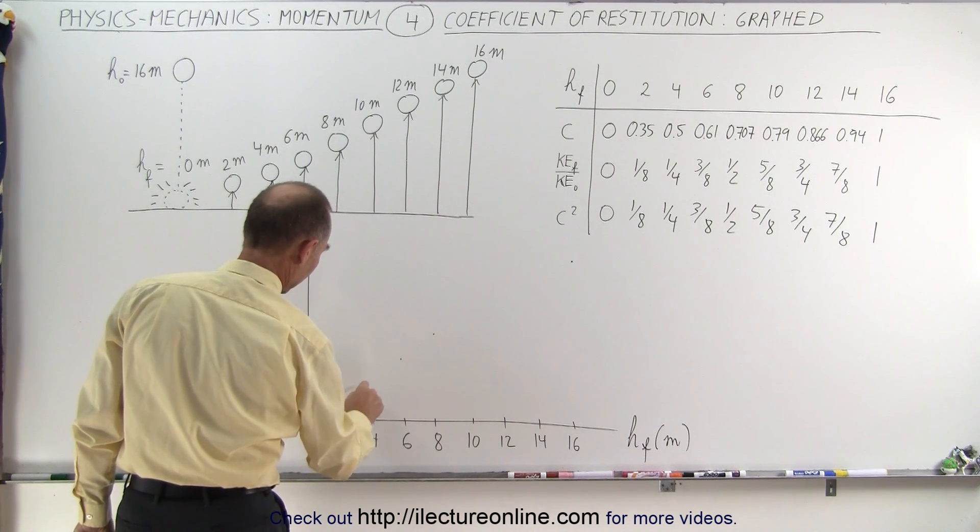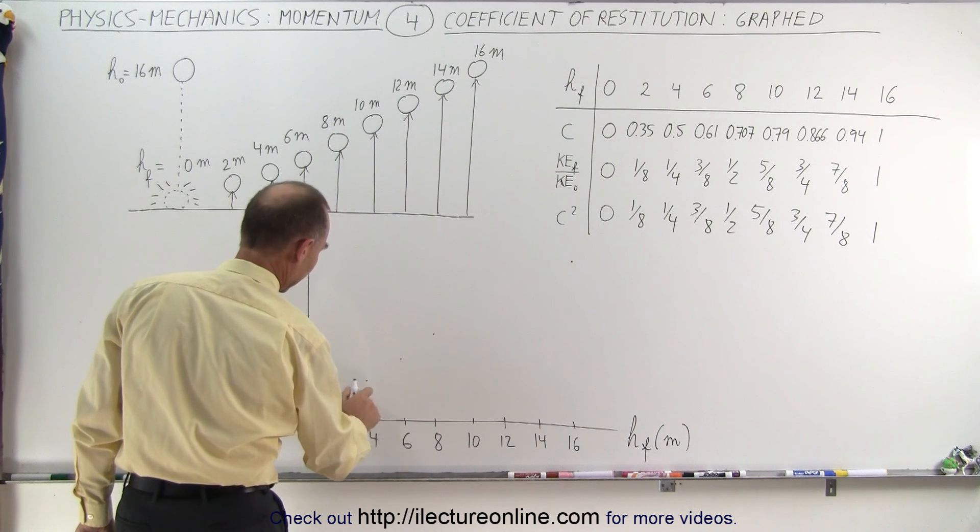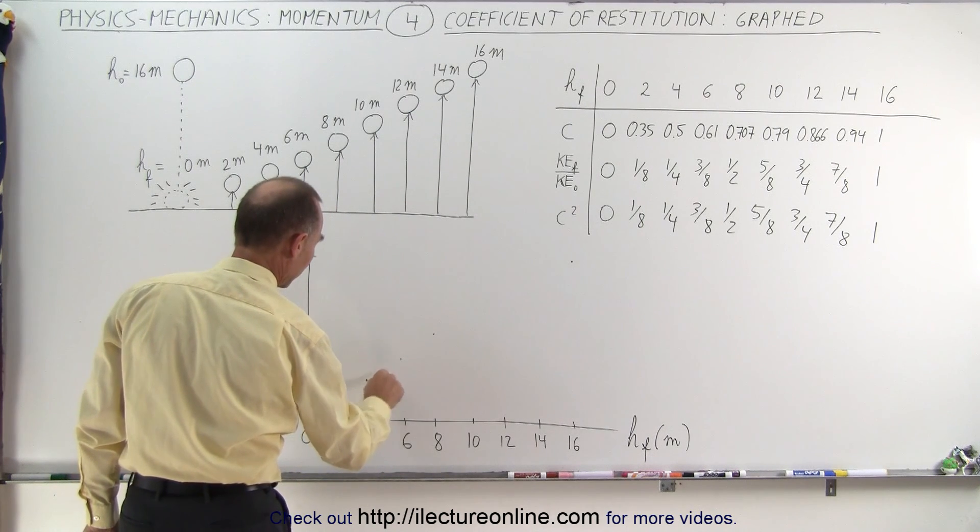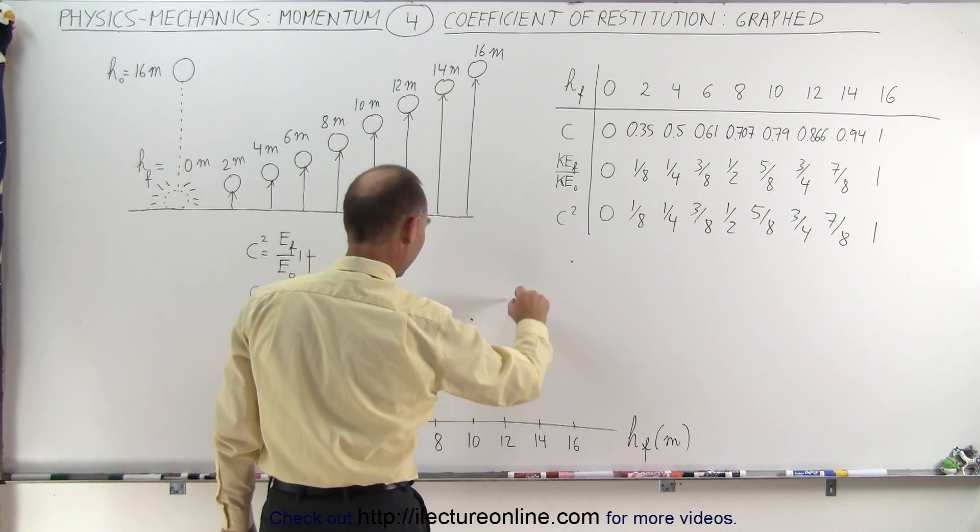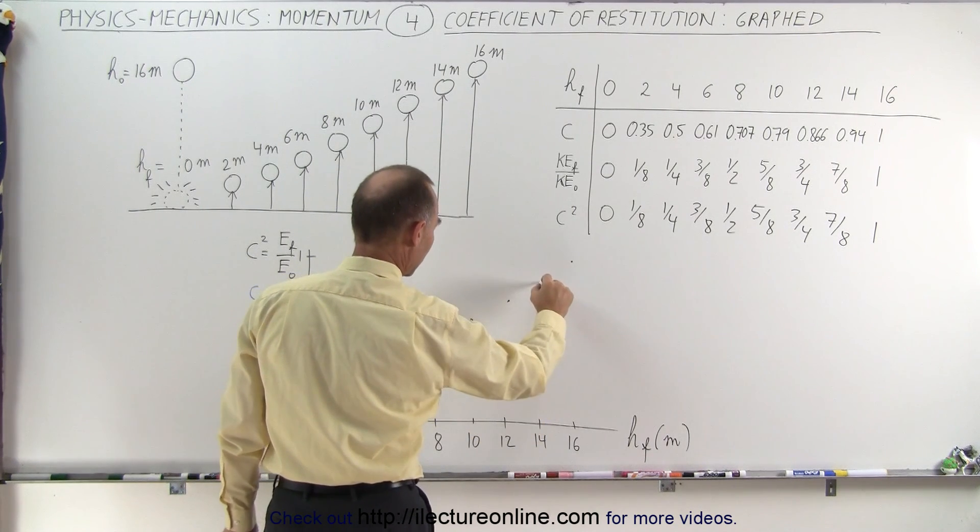And make sure I get this kind of looking linear like that. So these are the data points that are graphed. And then continuing on, you see at 10 meters, at 12 meters, and at 14 meters.